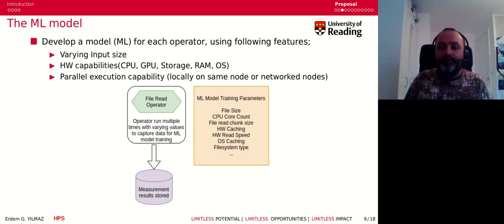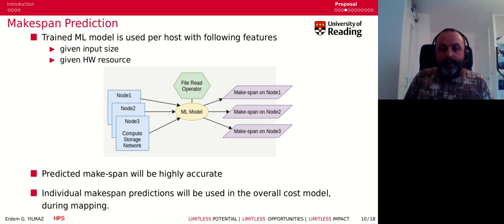The trained model is used per host with the following features: the input size and the hardware resources given as input. The machine learning model will be creating makespan predictions—how long will it take this operator to run on node one given an input size. These predictions will be stored for making further decisions on the scheduling, and the individual makespan predictions will become part of the overall cost model for the entire workflow.